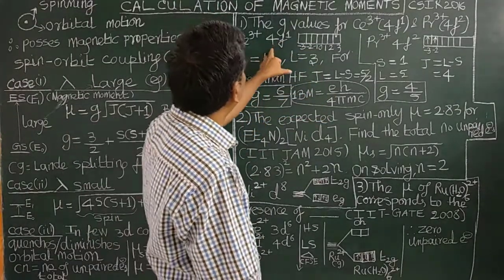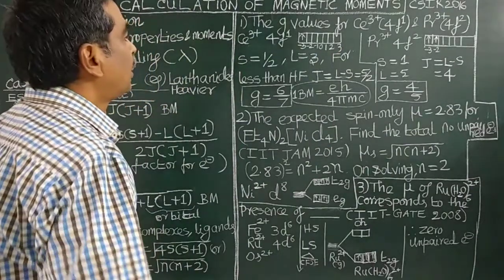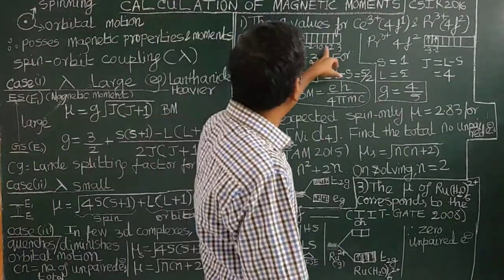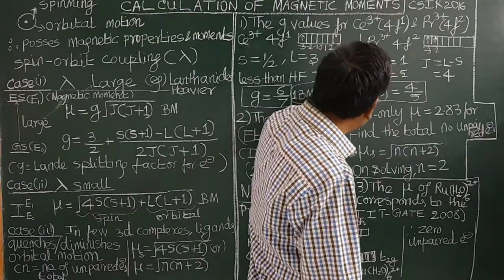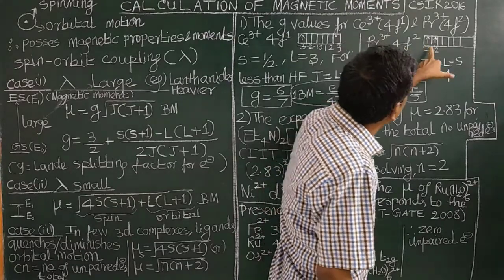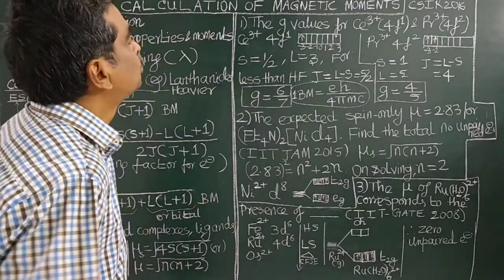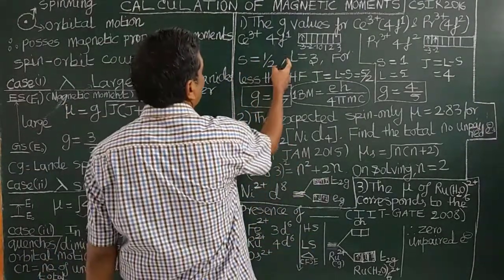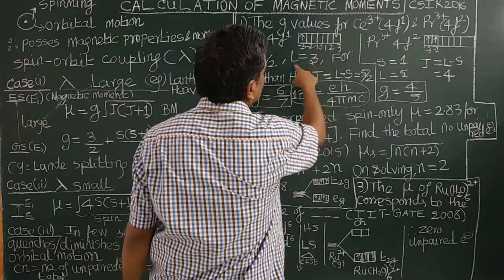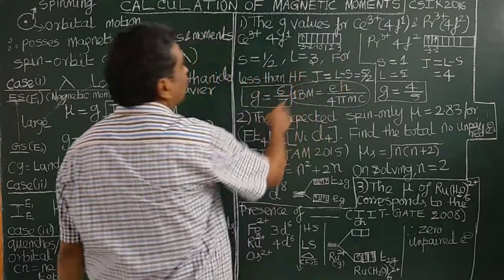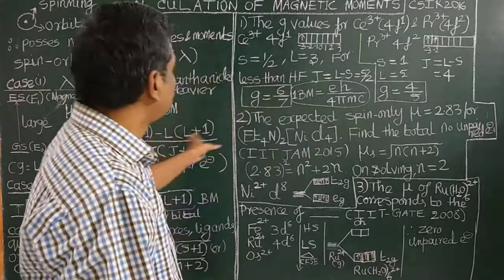For Ce³⁺ (4f¹): S equals 1/2, L equals 3, and since the shell is less than half-filled, J equals L minus S equals 3 minus 1/2. For Pr³⁺ (4f²): S equals 1, L equals 3 as well. Substituting into the G formula gives specific values. The ground state J is determined by the rule: less than halfway filled gives J = L − S; more than halfway gives J = L + S.